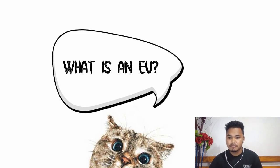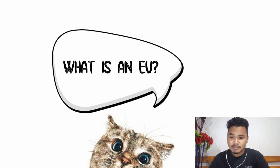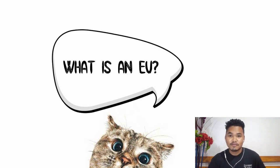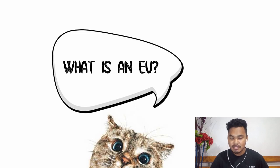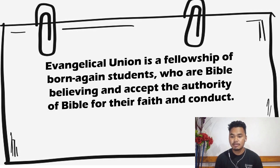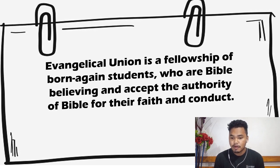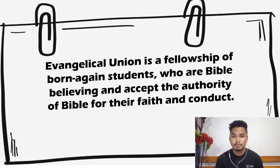Let's start with the first session, which is about forming an EU. But before we go to that topic, let us answer a few questions. The question on screen is: what is an EU? The textbook definition would be that the Evangelical Union is a fellowship of born-again students who are Bible-believing and accept the authority of the Bible for faith and conduct.